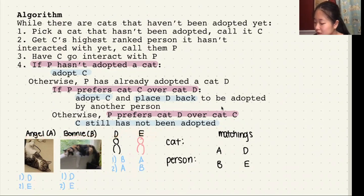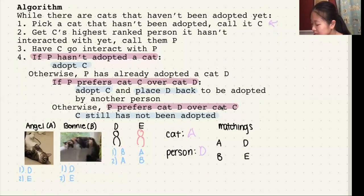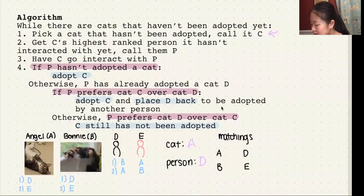First we're going to pick a cat that hasn't been adopted yet, which will be Angel, which is A. Then look for the highest ranked person it hasn't interacted with yet. It hasn't interacted with any person, so this person will just be D. Since D does not have a cat that it's adopted, we'll just say A and D are matched. Then we'll look at the next unmatched cat, which is B.